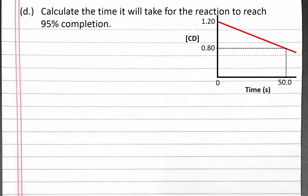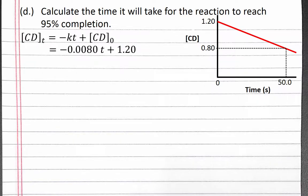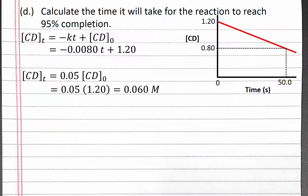Now let's calculate the time it will take for the reaction to reach 95% completion. Our integrated rate law is the concentration of CD at time T equals negative 0.0080 times time plus 1.2. We want to know at what time the concentration of CD is 5% of the starting concentration — this is the point at which the reaction is 95% complete. 5% of our starting concentration is 0.05 times 1.2, which is 0.060 molar.